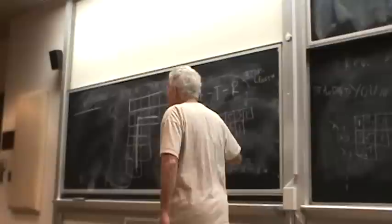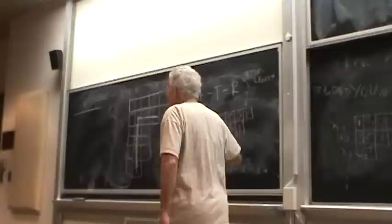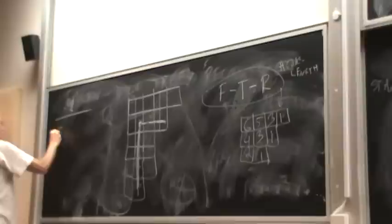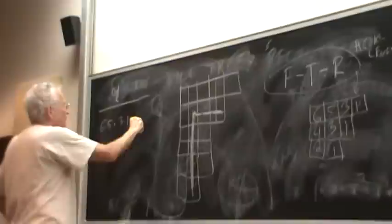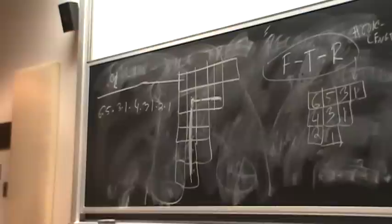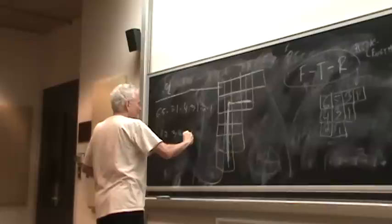Now, surprise. If you take nine factorial, in this case n, and you divide by all the hooks - six, five, three, one, one, times four, times three, times one, times two, times one - you get the exact number of standard Young tableaux. Let's do it. One times two times three times four times five times six times seven times eight times nine, divide by...